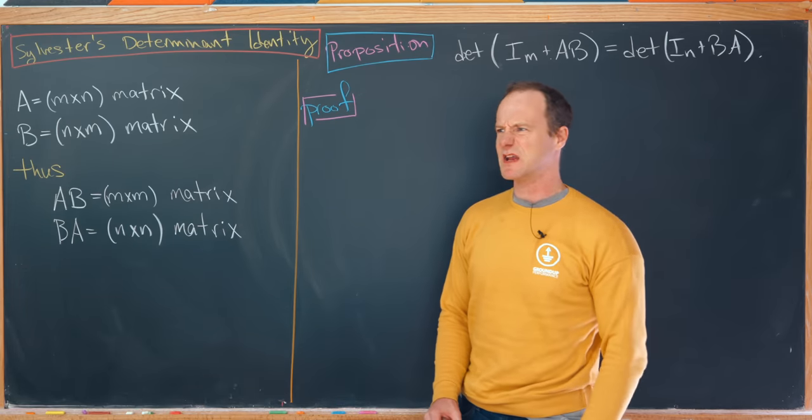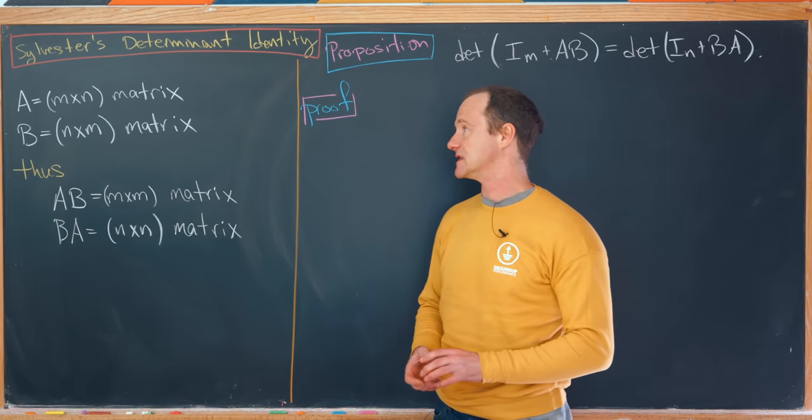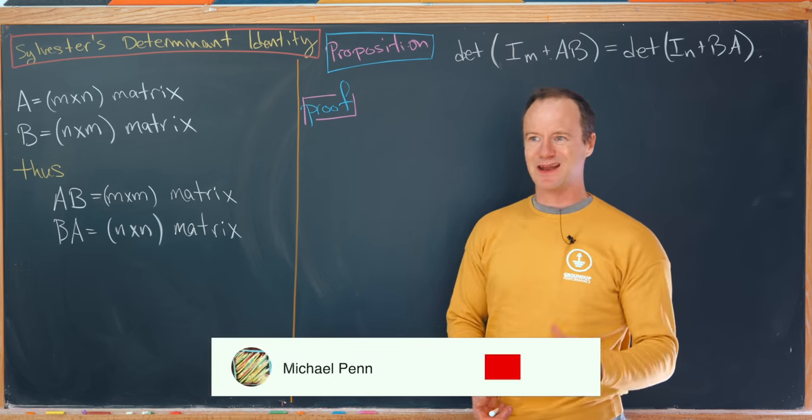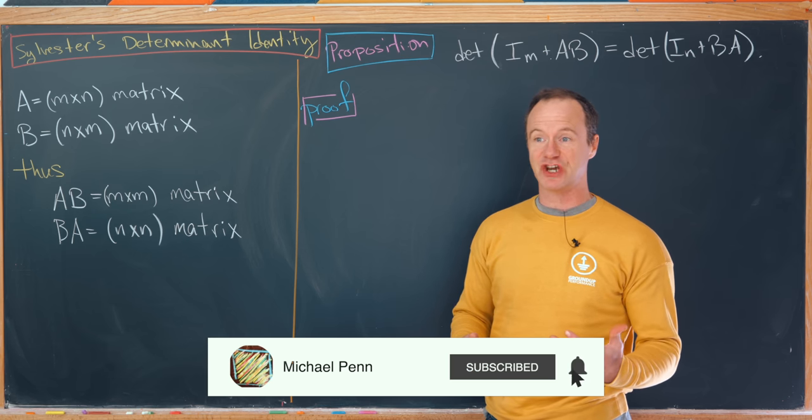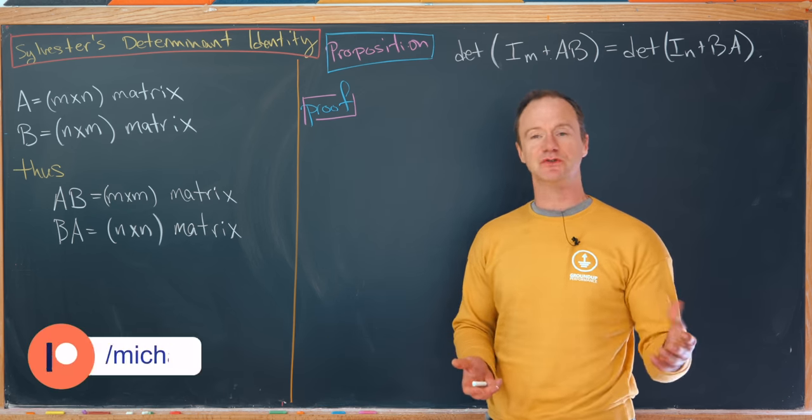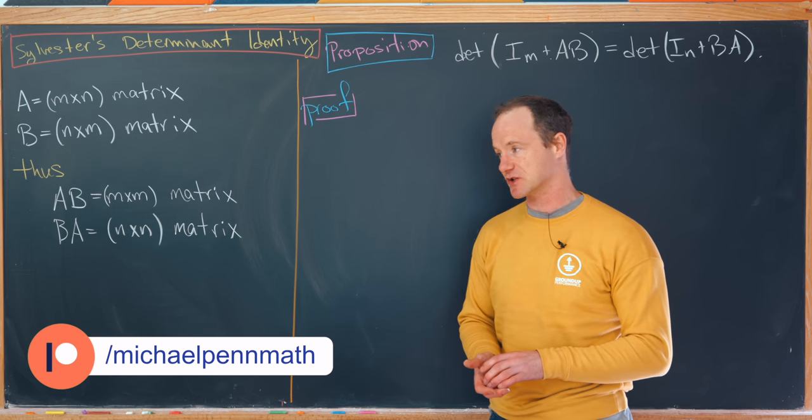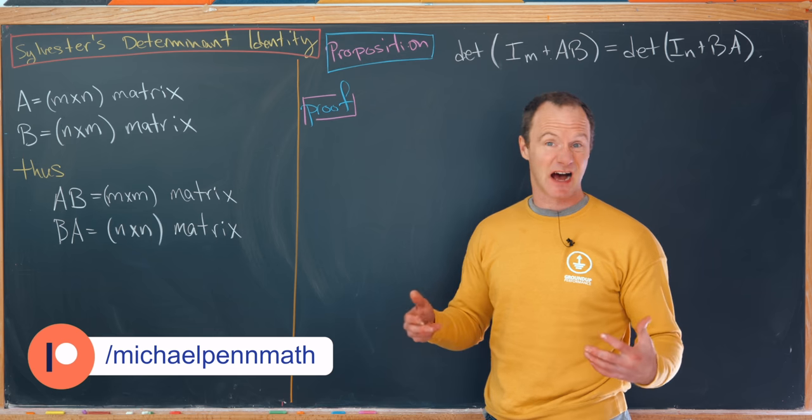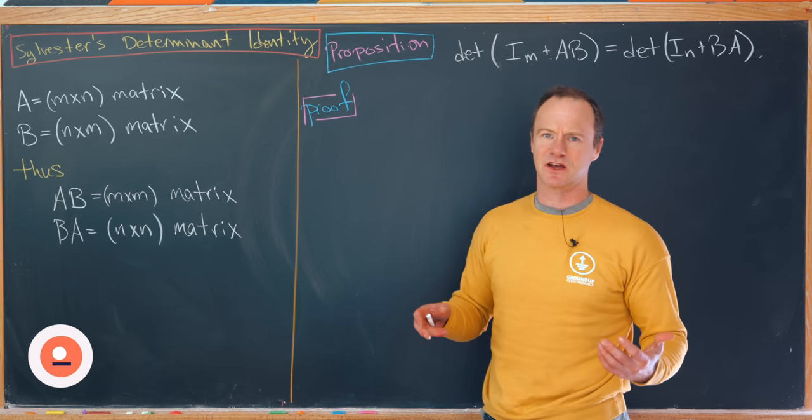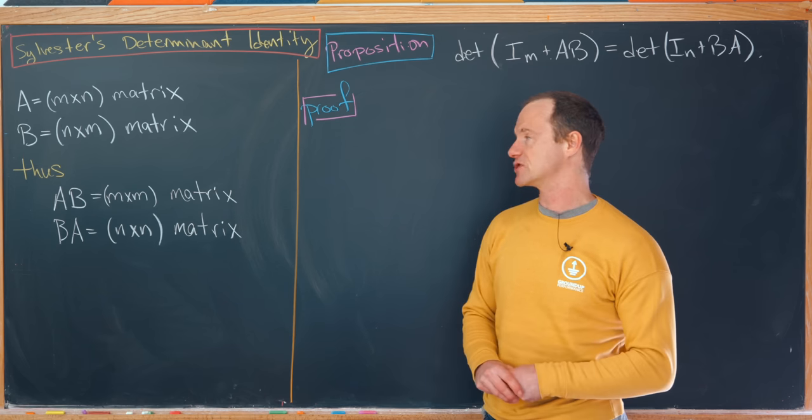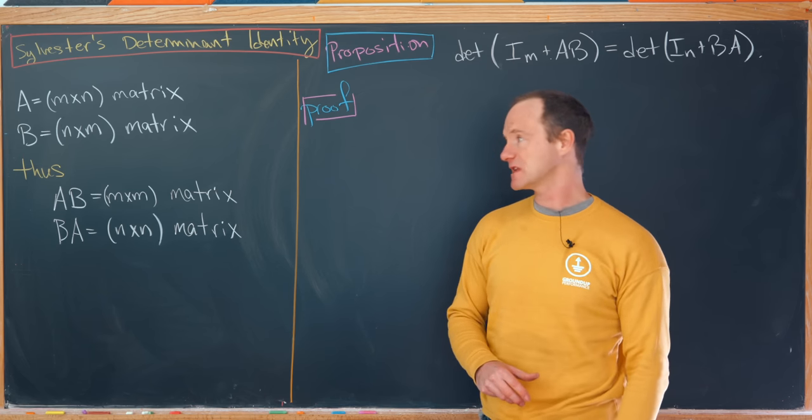Today we're going to look at an interesting determinant identity called Sylvester's determinant identity, and it has the power of changing a large determinant or the determinant of a large matrix into the determinant of a small matrix. So let's look at the setup.